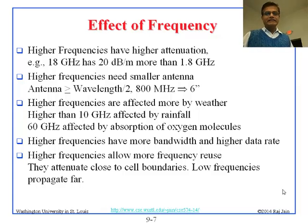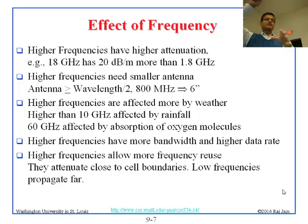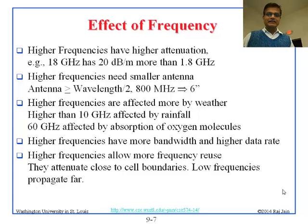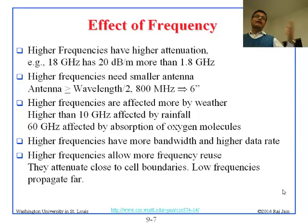Third: higher frequencies are affected more by weather. If it starts raining, the signal does not travel as far — in particular, some frequencies. There are peaks and valleys in the spectrum due to rain effects on different frequencies. Higher frequencies have more bandwidth and therefore higher data rates — the good thing is that at 60 GHz, you can easily find 2 GHz of bandwidth. You cannot find 2 GHz of bandwidth at 500 MHz. So higher frequencies are good because you can get lots of spectrum.